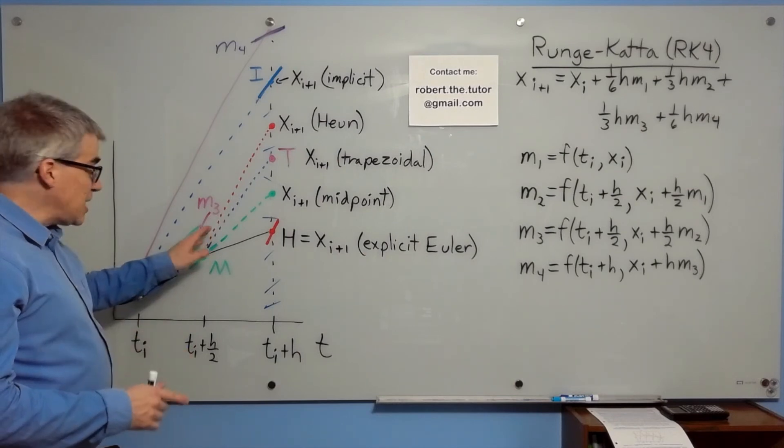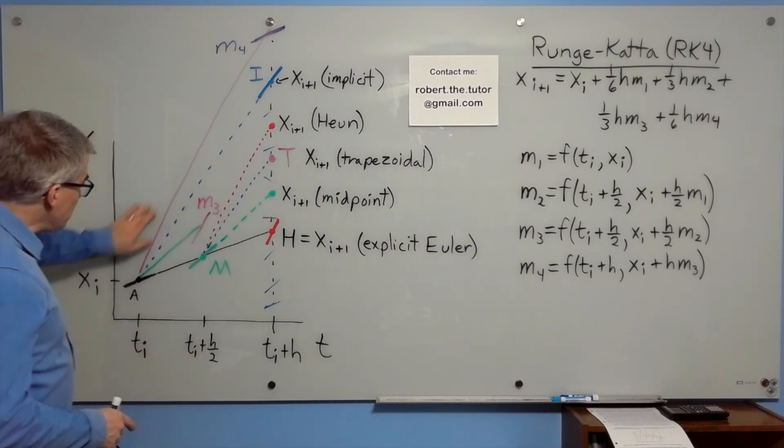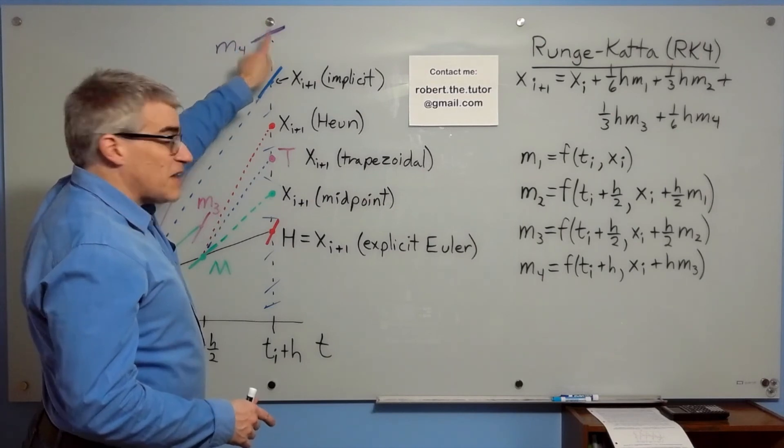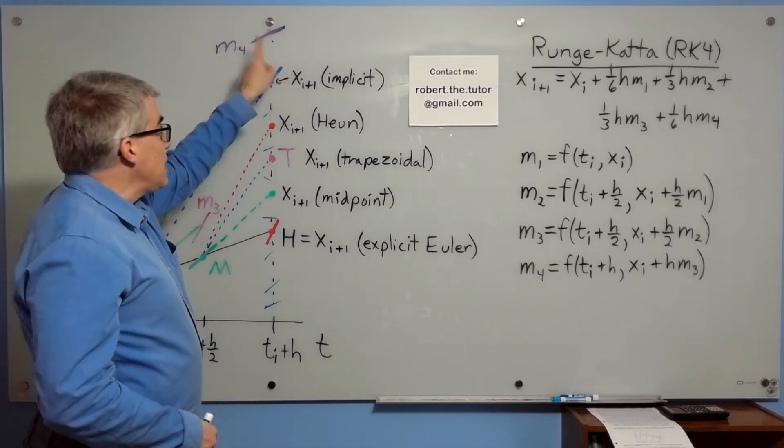Finally, you take slope m3, go back to the beginning, and follow it all the way up. Find the slope there, and that is m4.